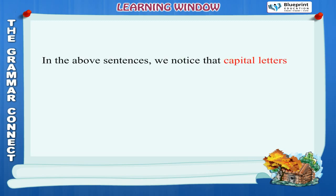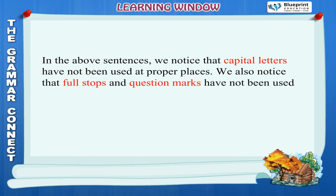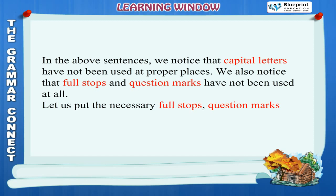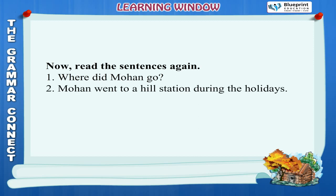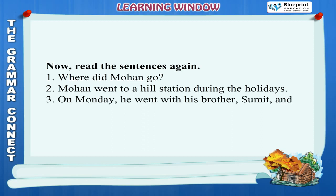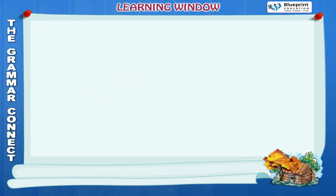In the above sentences, capital letters have not been used at proper places. Full stops and question marks have not been used at all. Let us put the necessary full stops, question marks and capital letters at the proper places. 1. Where did Mohan go? 2. Mohan went to a hill station during the holidays. 3. On Monday, he went with his brother Sumit and his pet dog Bobo for a walk to a nearby pond.